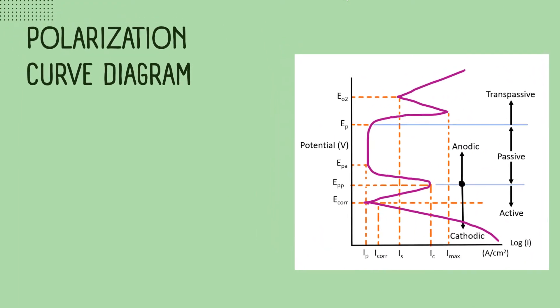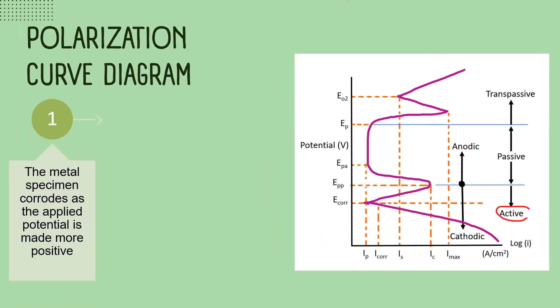Then in the polarization curve diagram, firstly, in the active region the metal specimen corrodes as the applied potential is made more positive. Secondly, in the passive region, a further increase in potential provokes a decreasing in current density, signaling the start of the passivation process.